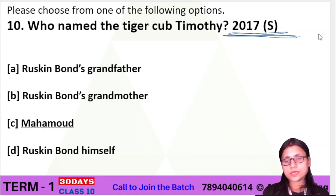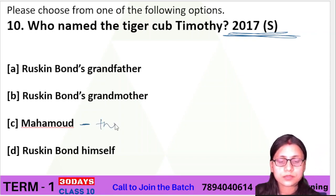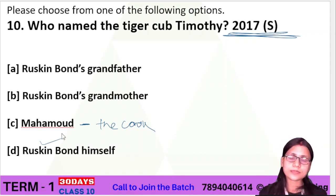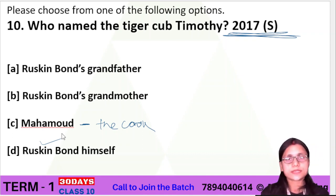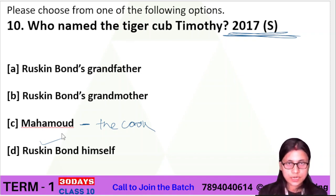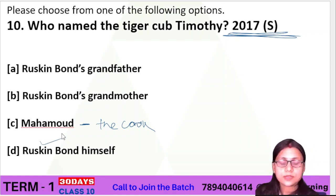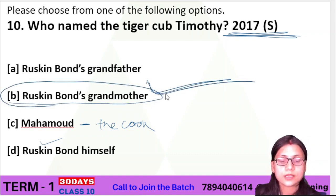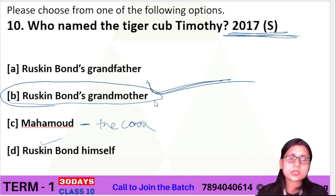The correct answer is Muhammad. Muhammad is the cook at Ruskin Bond's house. He is the one who named the tiger cub Timothy. Timothy used to sleep in Muhammad the cook's quarter. Also, Timothy died of pneumonia.